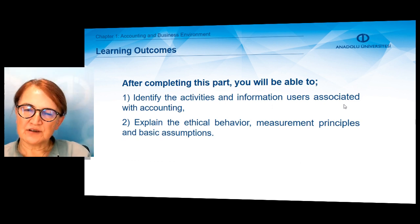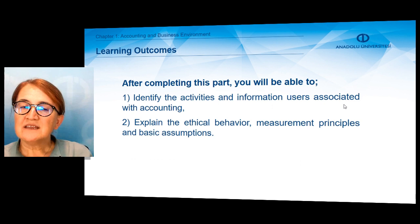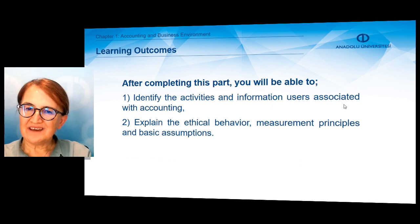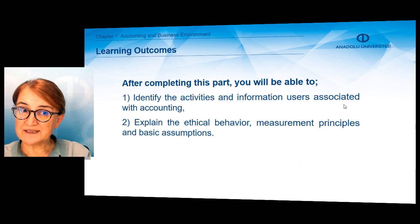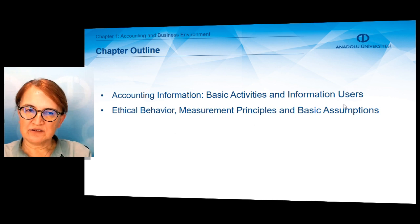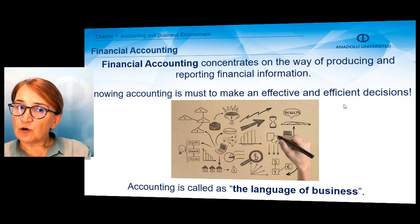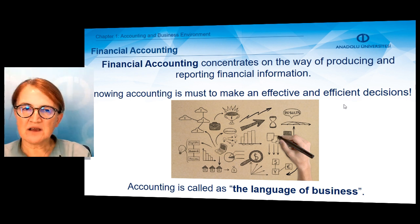In the first part of Chapter 1, you'll identify the activities and information users, and you can explain the ethical behavior, measurement principles, and basic assumptions. We'll have two titles in the first part: Accounting Information and Ethical Behavior, and Measurement Principles and Basic Assumptions. When we talk about accounting, we can also call it financial accounting — it's the same thing.